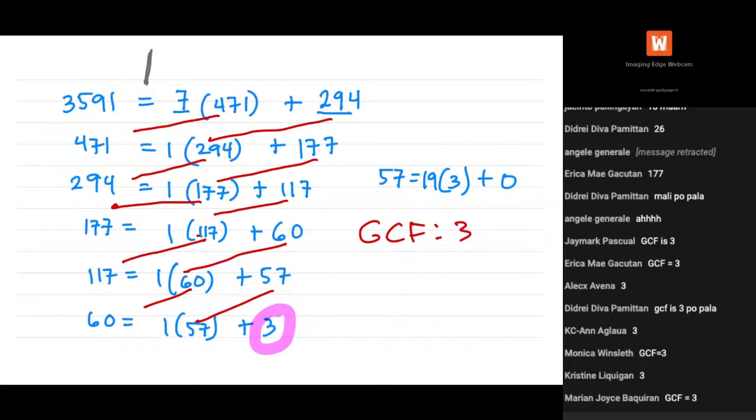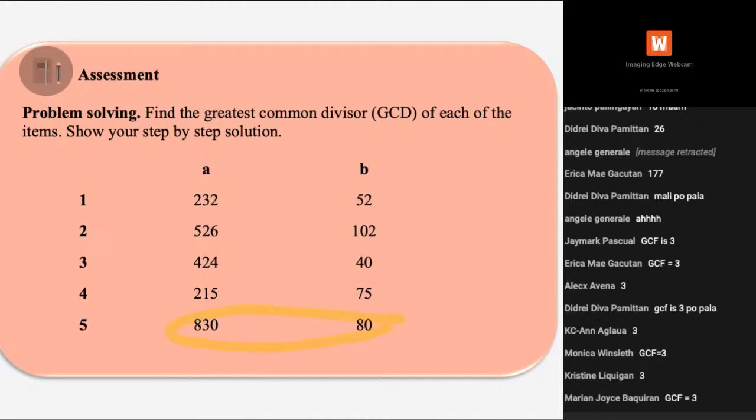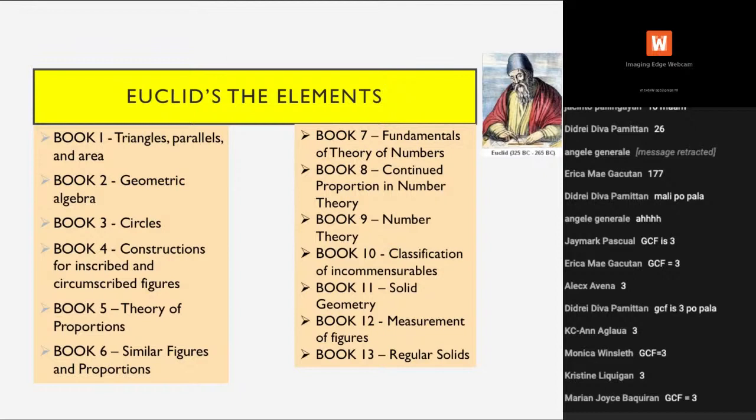That's how we make use of the Euclidean algorithm. The remaining examples will be for your assignment. Now, one last slide: Euclid's The Elements. There are 13 books in The Elements, and the following are the focus or contents of each book.